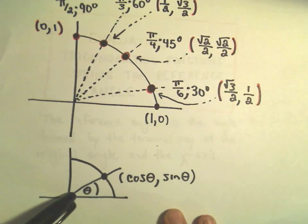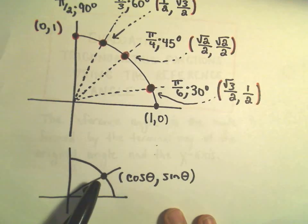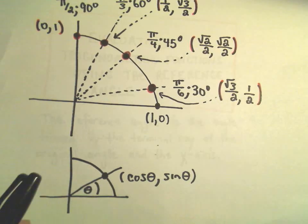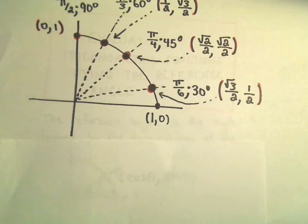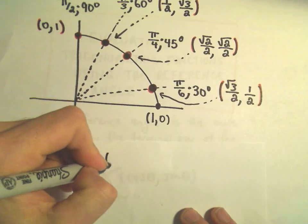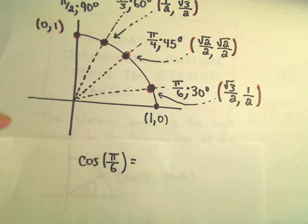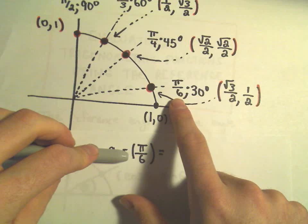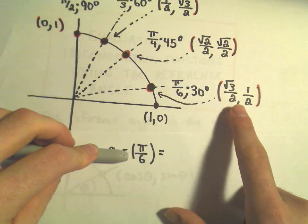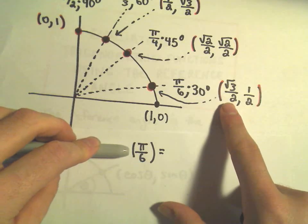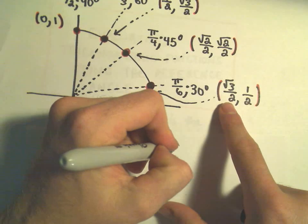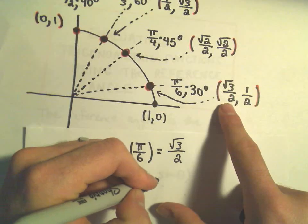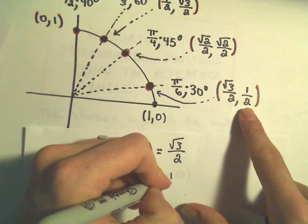For any angle theta, cosine of theta is just going to be the x-coordinate on that circle, and sine of theta is going to be the y-coordinate. For example, cosine of π/6 — I find the angle π/6, the point is (√3/2, 1/2), so cosine of π/6 equals √3/2. Sine of π/6 has to do with the y-coordinate, so sine of π/6 is just 1/2.